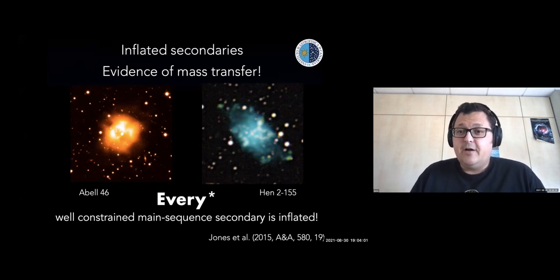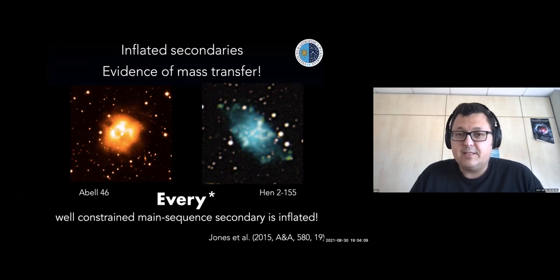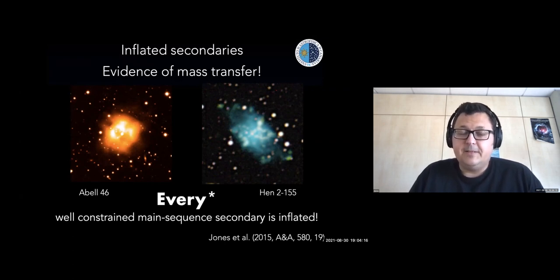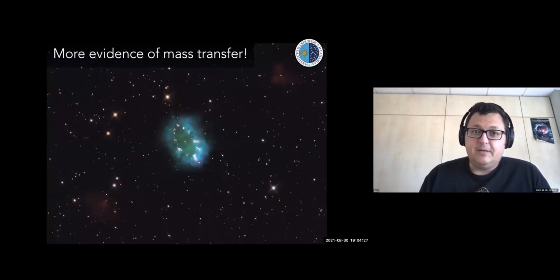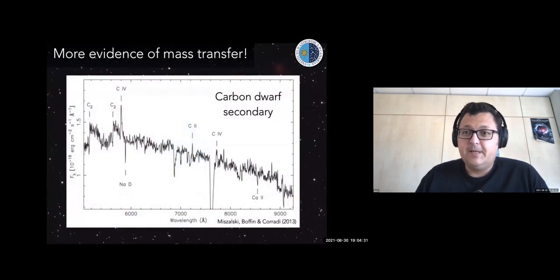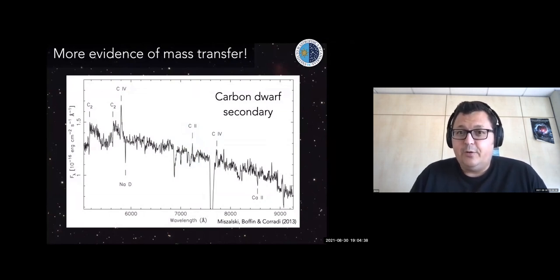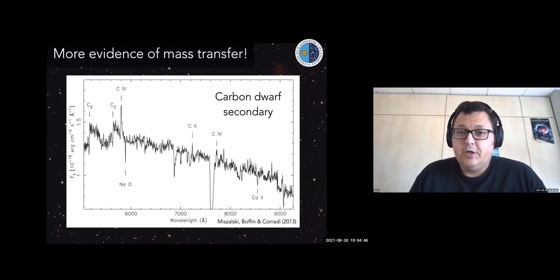In all the other cases the companions are inflated, and this seems to be a consequence of mass transfer — probably before the common envelope, because the amount of accretion during the common envelope shouldn't be sufficient. Here's another indication of mass transfer: in one central star, the companion is a low-mass main sequence star heavily polluted in carbon — a dwarf carbon star, an example mentioned in the introduction. These seem to be the common envelope equivalents of barium stars, which are the much wider-period chemically contaminated binaries.